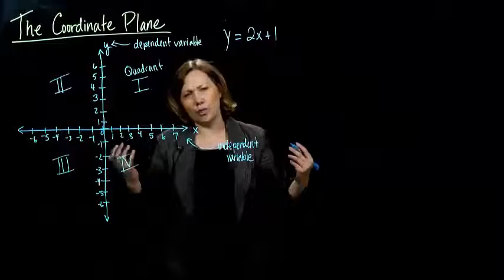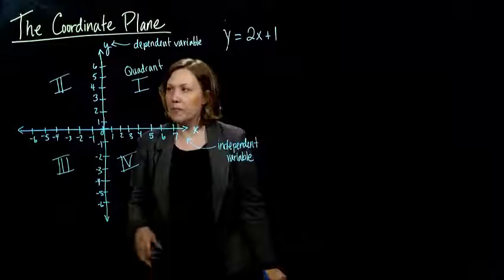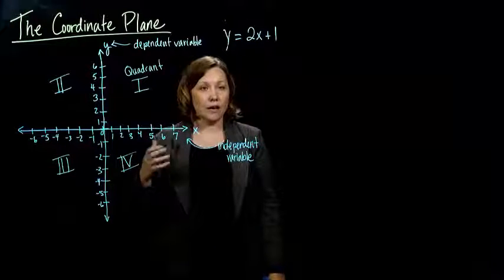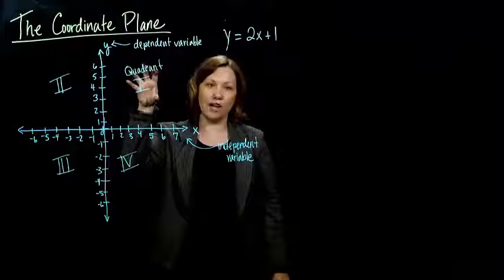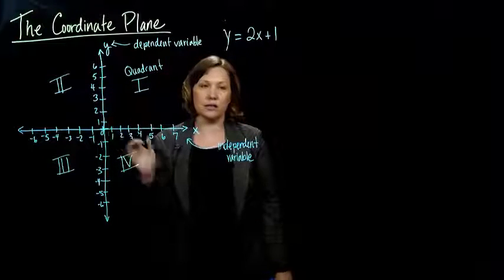And we write them as Roman numerals to be fancy. So if someone says, put me a point in quadrant one, right? You know you go to this upper right quadrant where both the x's and y's are positive.